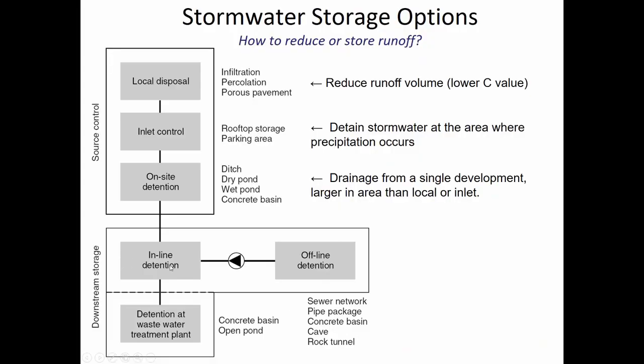Inline detention and offline detention are differentiated by whether there's a control valve that has to be activated to reroute water out of its normal flow path. Inline detention is essentially wide spots in the pipe where water is allowed to pool and, by gravity flow, continues on its original path.